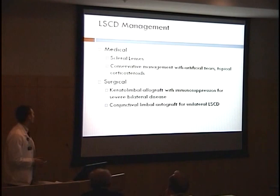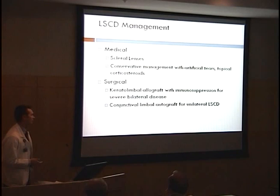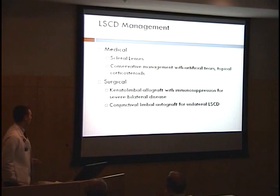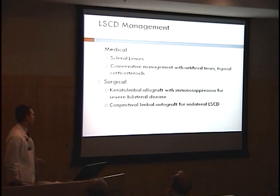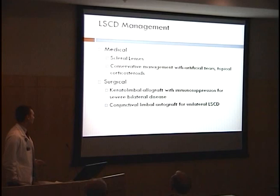Medical management of limbal stem cell deficiency can be done with scleral lenses. In one study, a patient with LSCD secondary to contact lens use was treated with scleral lenses for nine months; his cornea re-epithelialized and he had no pain or discomfort after that. Also, conservative management with artificial tears and topical steroids. For more severe disease, like bilateral limbal stem cell deficiencies in autoimmune cases, you can use a keratolimbal allograft from a donor. If the patient has a unilateral defect from something like an alkali burn, you can do a conjunctival limbal autograft from the patient's good eye.